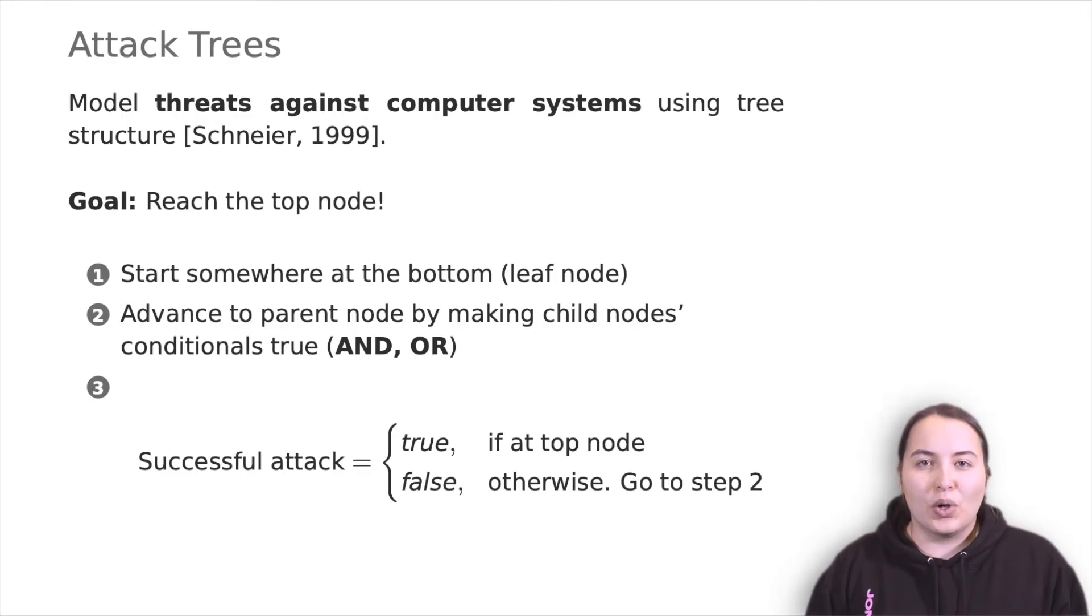Each node becomes a sub-goal and children of that node are ways to achieve the sub-goal. Once the tree is built, one can assign values to the various leaf nodes, then make calculations about the nodes. Once the values are assigned, one can calculate the security of the goal.